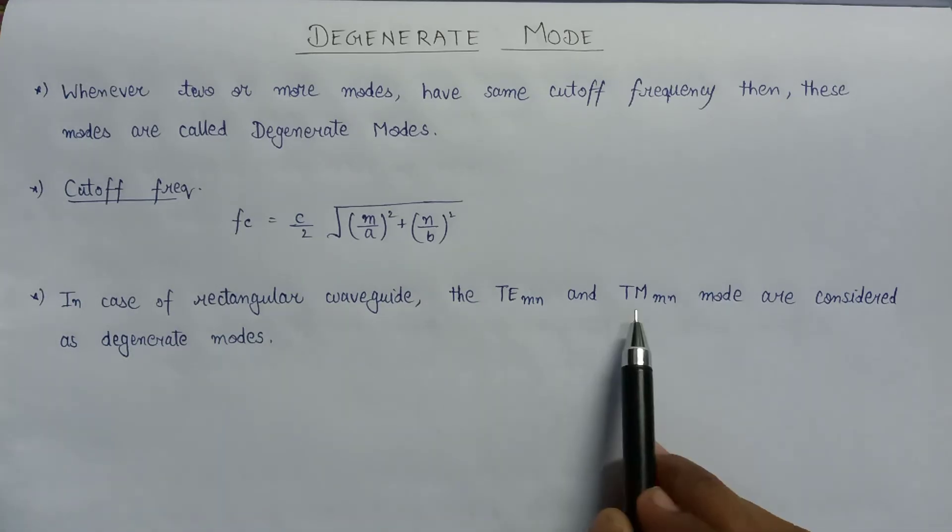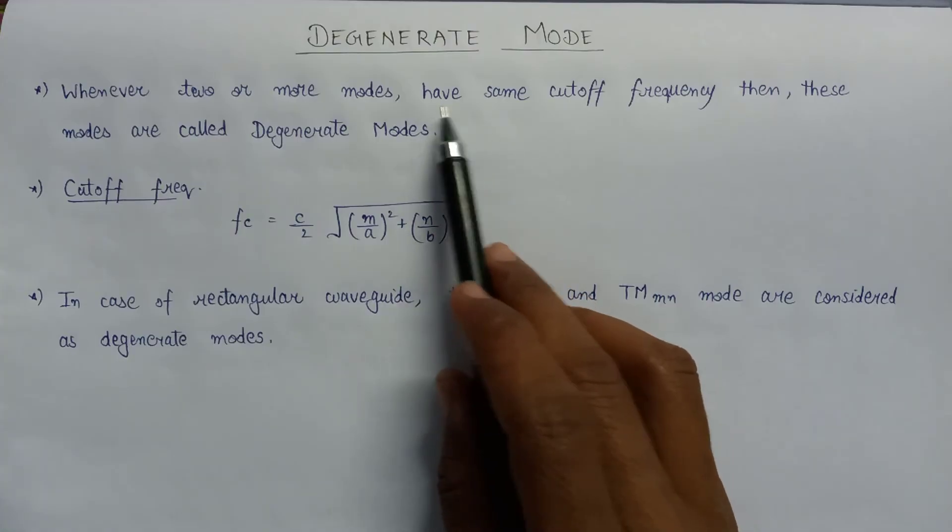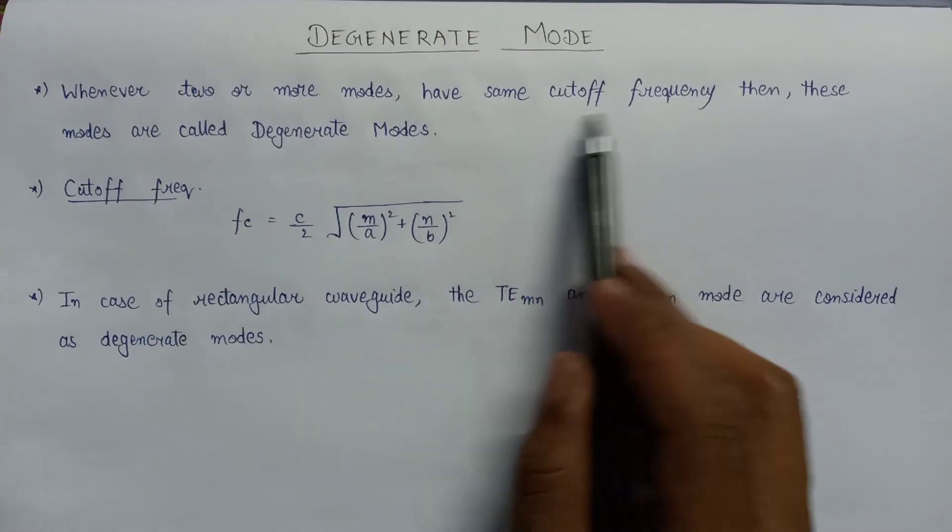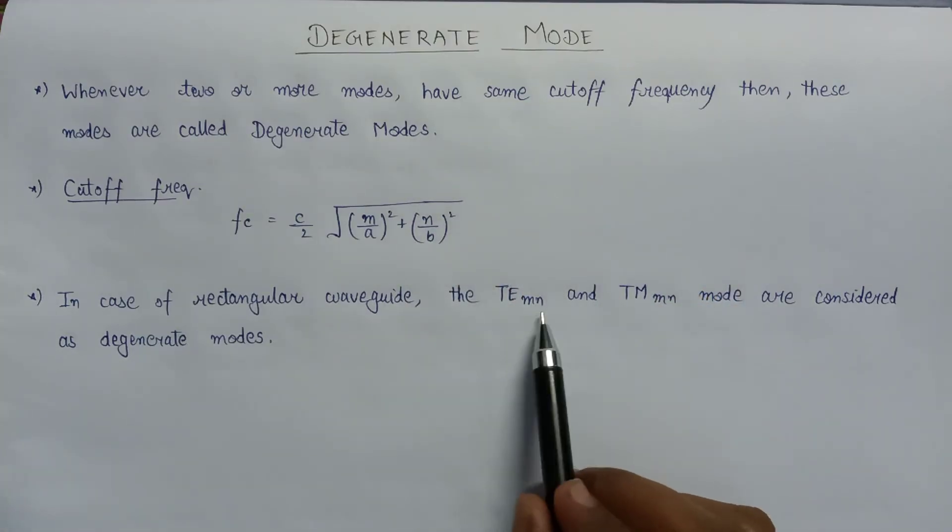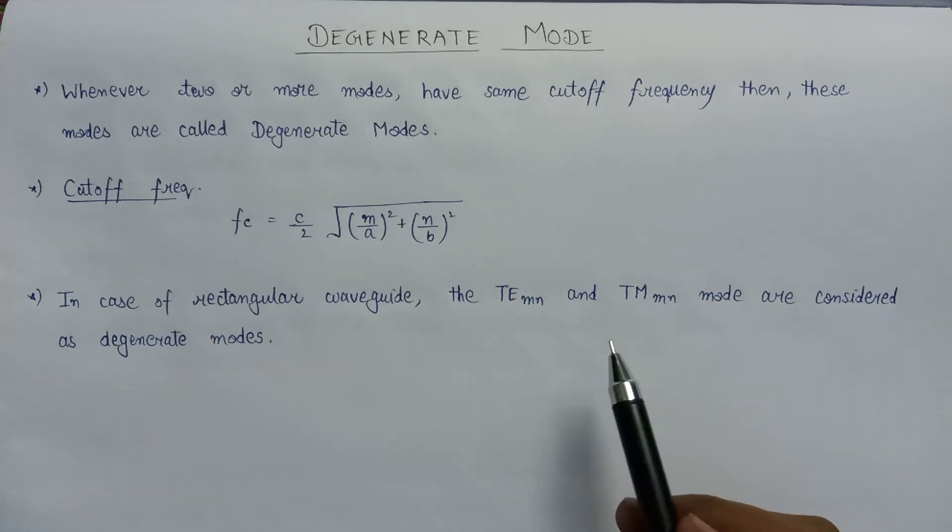Why are these two modes considered as degenerate modes? Because degenerate modes have the same cutoff frequency, that's why the TE_mn and TM_mn modes have the same cutoff frequency.